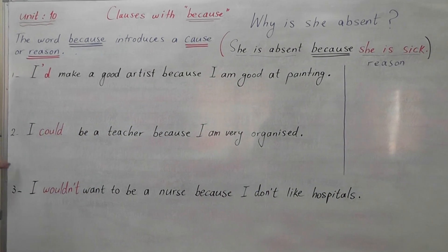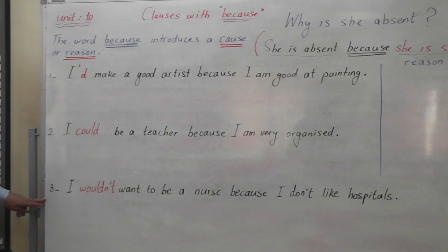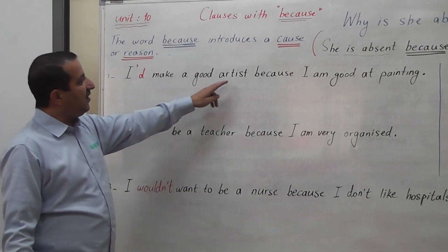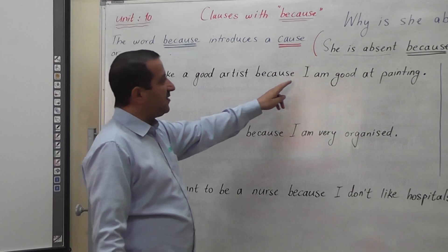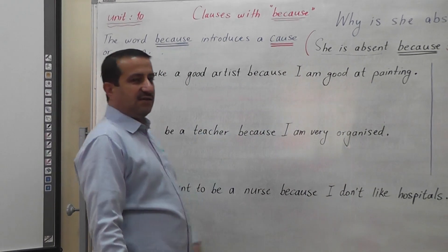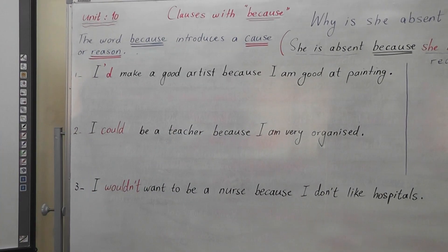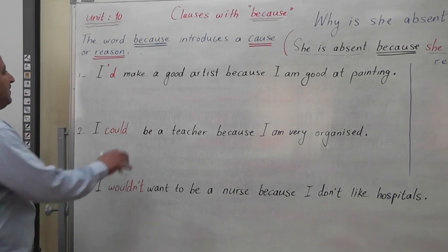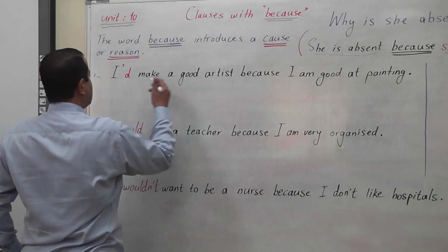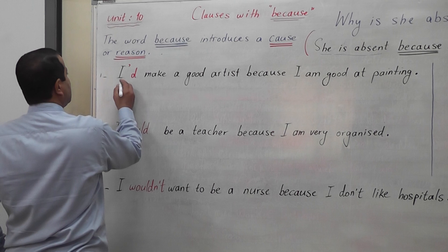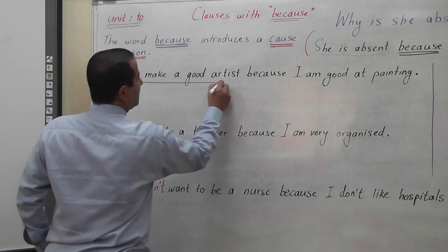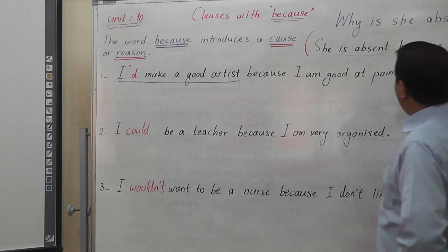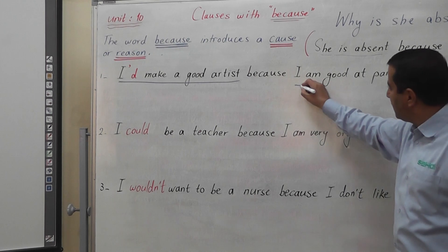If we look at the sentences on the board, the first example is: 'I make a good artist because I am good at painting.' You can notice that this sentence has two clauses. 'I make a good artist' is the main clause, and 'because I am good at painting' is the second clause.